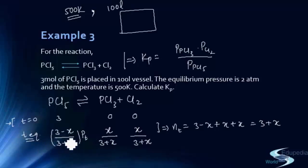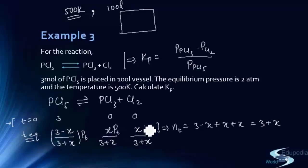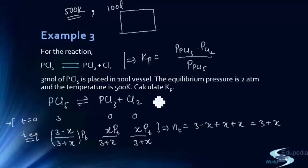Pt must always be calculated at equilibrium because we are finding partial pressures at equilibrium, not at t=0. Pt may change with time. We multiply each mole fraction by Pt to get the individual partial pressures, then substitute these values into the Kp expression.